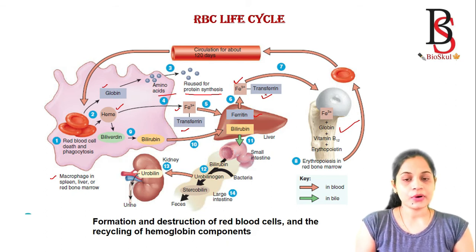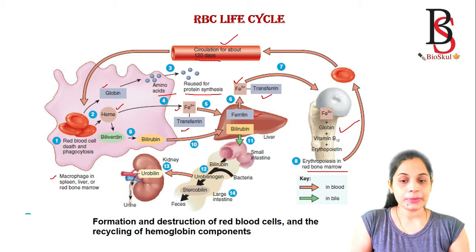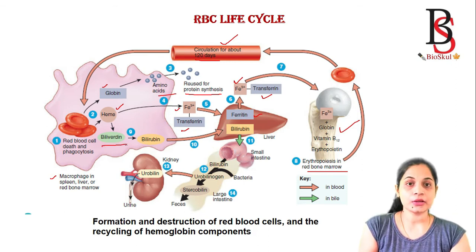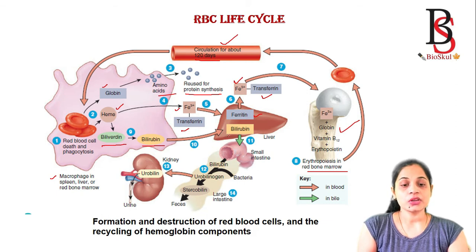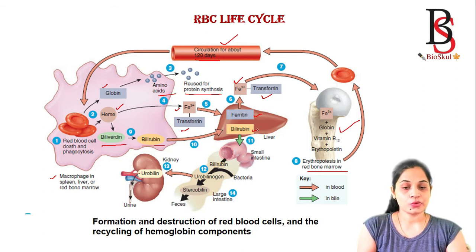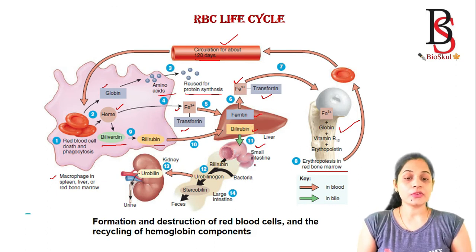After 120 days, worn-out red blood cells are again phagocytized by macrophages. The remnant portion of the heme after iron release forms a green pigment called biliverdin, which is then converted into a yellowish-orange pigment called bilirubin. Bilirubin is transported to the bloodstream, then to the liver, then to the small intestine, and finally to the large intestine, where bacteria convert it into urobilinogen, which becomes urobilin in the bloodstream and stercobilin released in the feces.